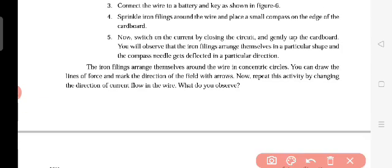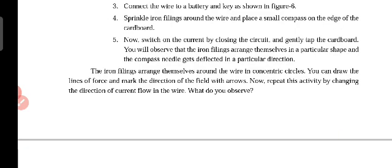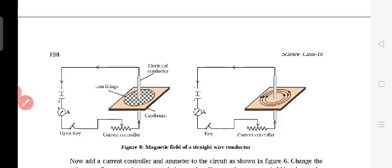What to do first? Now switch on current by closing the circuit. Closing the circuit means we close all the circuits, positive, negative and everything, connect everything properly and put on the switch. Then gently tap the cardboard. You will observe that iron fillings arrange themselves in a particular shape and the compass needle gets deflected in a particular direction.